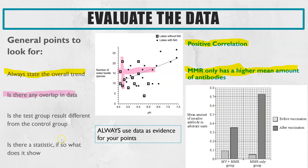Those are the general points, but for each question you would have to pick out specific points from the graph or data table you have. For example, we only have data points for the higher pHs for one of the lakes, and we only have five or six data points, which isn't really enough to be confident in a positive correlation.